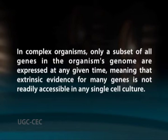Extensive sequencing of mRNA and protein products is required to apply this approach systematically in complex organisms. Only a subset of all genes in the organism's genome are expressed at any given time, meaning that extrinsic evidence for many genes is not readily accessible in any single cell culture. Many hundreds or thousands of different cell types must be studied to collect extrinsic evidence for most or all genes in a complex organism. For example, some human genes may be expressed only during development as an embryo or fetus, which might be difficult to study for ethical reasons.